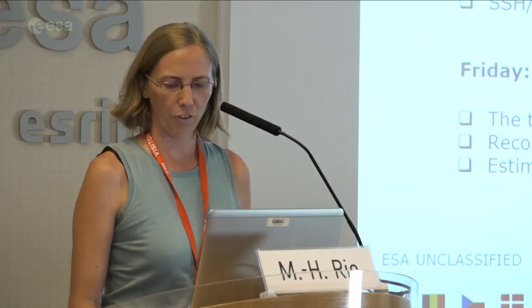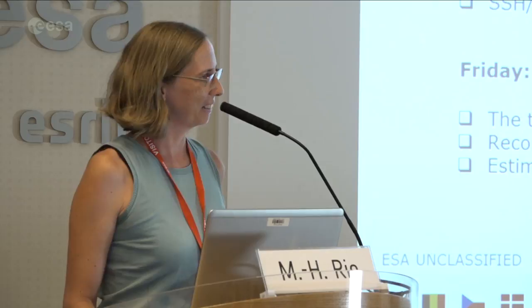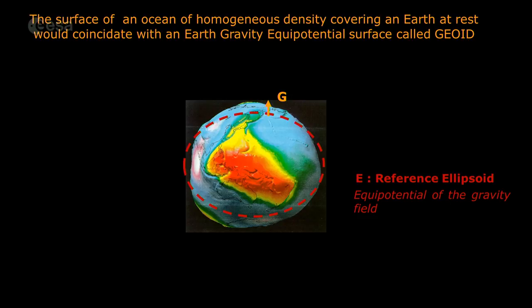Let's start with some basics about ocean circulation. Imagine an Earth with no sun, no moon, no wind — just the ocean. In that case, the surface of the ocean of homogeneous density would coincide with a gravity equipotential surface called the geoid. Now, if we put the Earth back into the real world with sun, wind, rain, and everything, water parcels will start to move, generating a number of currents.